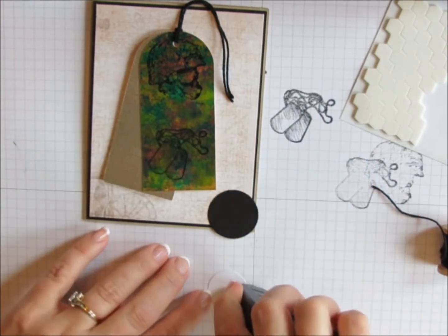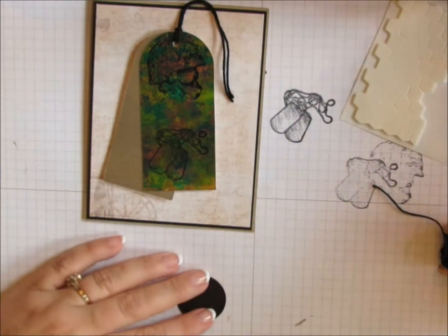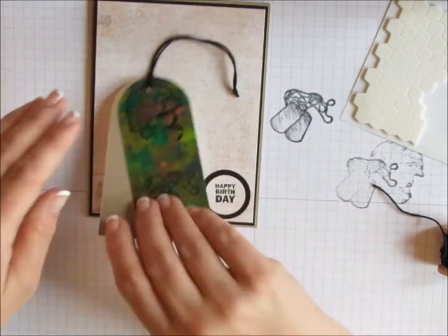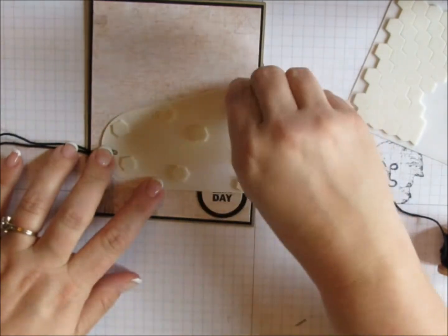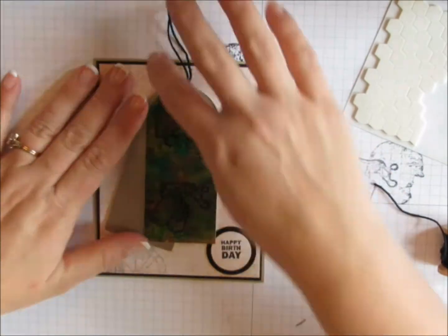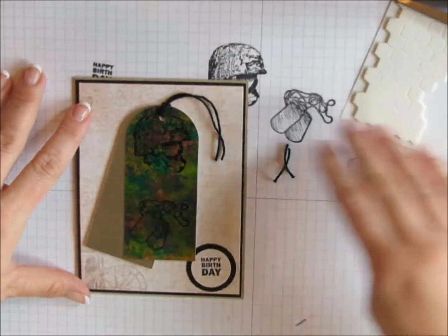I'm just going to use some Fast Fuse to adhere my circles to each other and then adhere them to the card base. I removed all the backings from my dimensionals and then stuck the tag to the card. And then I'll just trim off the little edges of my twine there so it doesn't hang down quite so long.